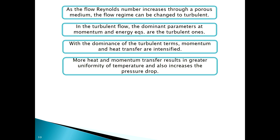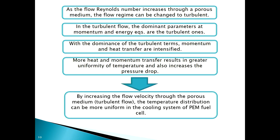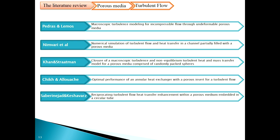As the flow Reynolds number increases in a porous medium, the flow regime can change to turbulent. In turbulent flows, the dominant parameters in the momentum and energy equations are turbulent ones. With the dominance of turbulent terms, momentum and heat transfer are intensified, resulting in greater temperature uniformity but also increased pressure drop. Increasing flow velocity through the porous medium makes the flow turbulent, which can lead to more uniform temperature distribution in the cooling system of a PEM fuel cell.